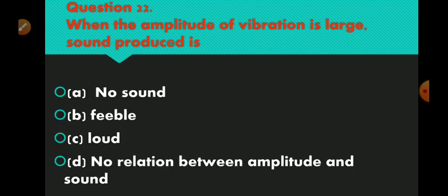Question number 21: above how many decibels does sound become physically painful? Option A 60, option B 40, option C 20, option D 80. Option D is correct — 80 dB. Question number 22: when the amplitude of vibration is large, sound produced is. Option A no sound, option B feeble, option C loud, option D no relation between amplitude and sound. Option C is correct — loud.